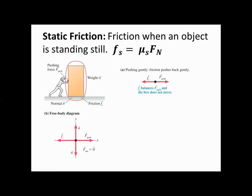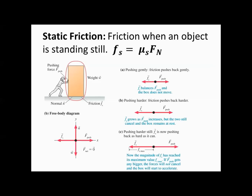If we push gently, the static friction pushes back gently. If we push a little bit harder, the static friction will push back harder too. Eventually we can push so much to make the static friction reach its maximum. That is the point right before the object starts to move. So the static friction increases and increases, reaches a maximum, and then it won't go any higher. If your applied force is greater than friction, the object will move.